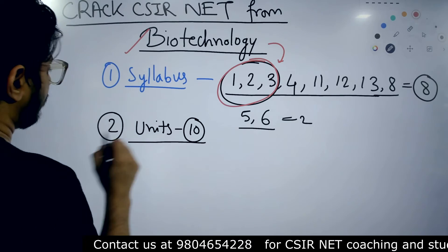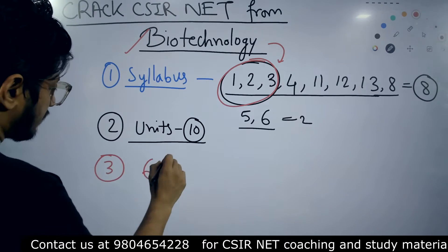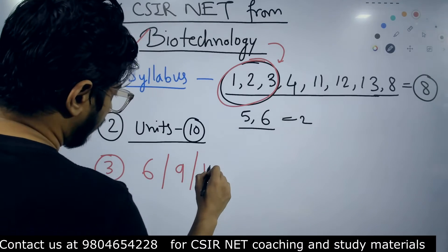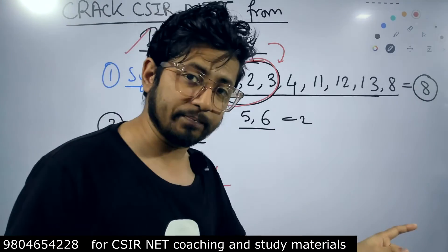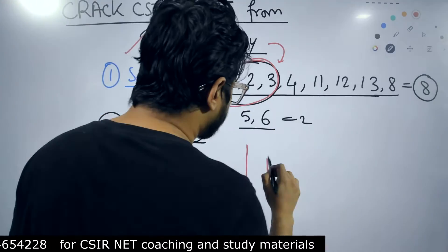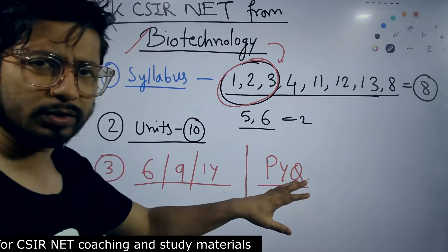And what else you need to know: if you prepare these 10 units, then yes, with the time frame of 6 months or 9 months or a year, you can still qualify the CSIR NET life science examination. And what you need is solving PYQs, previous years question papers. You have plenty of books in the market.